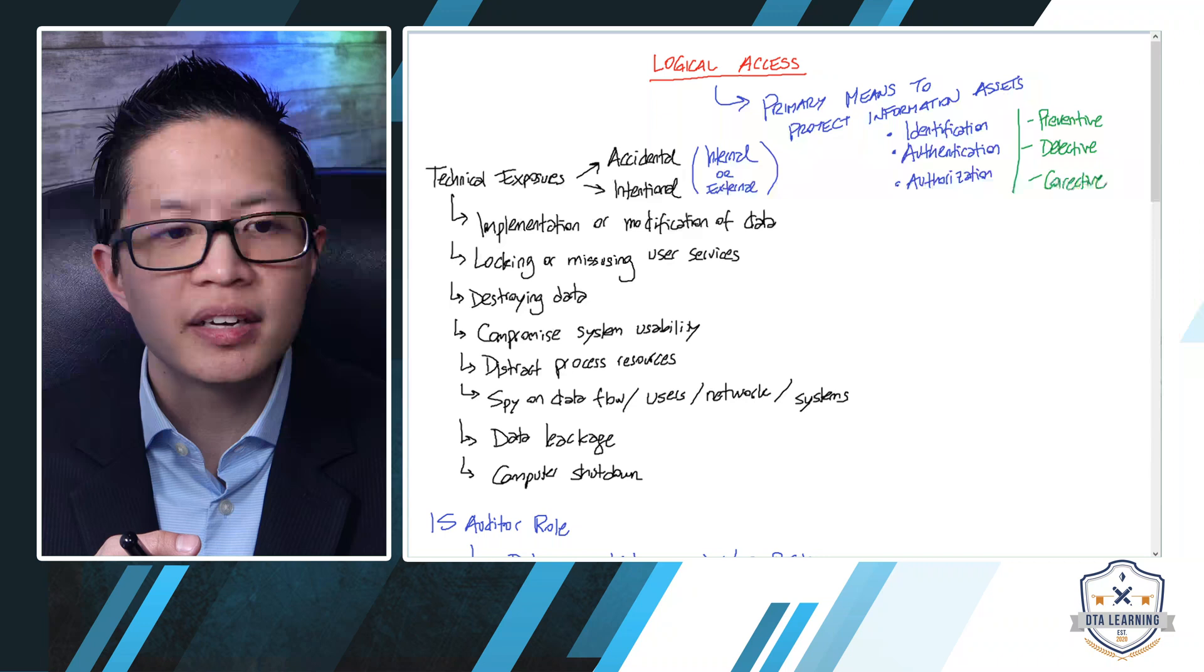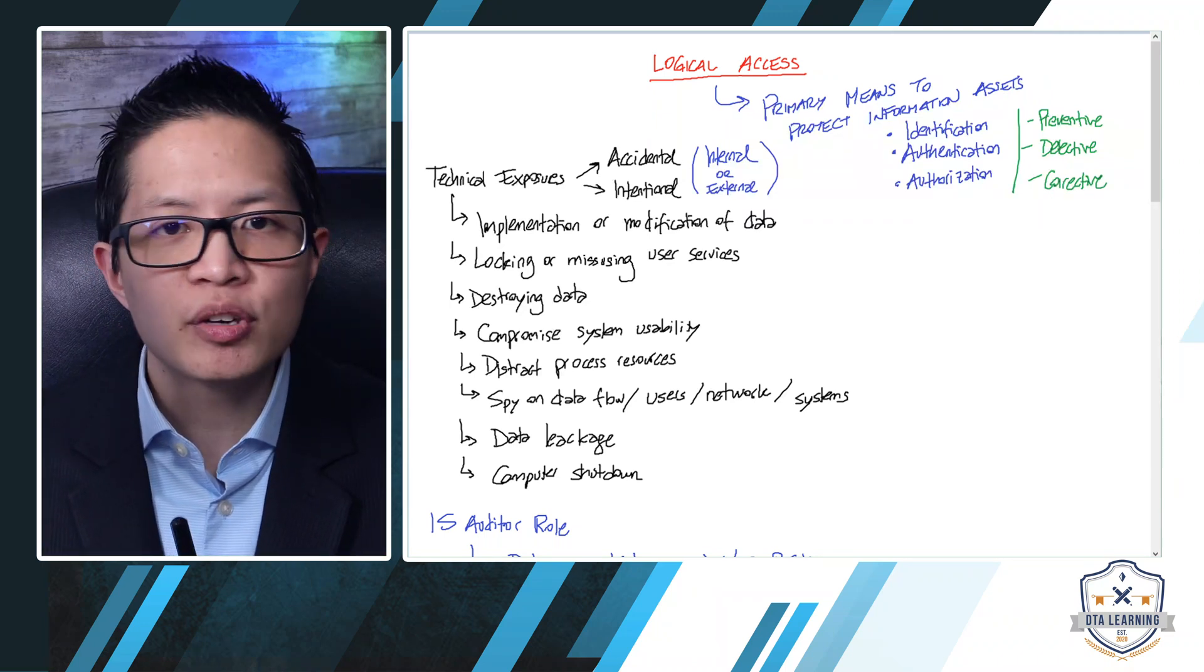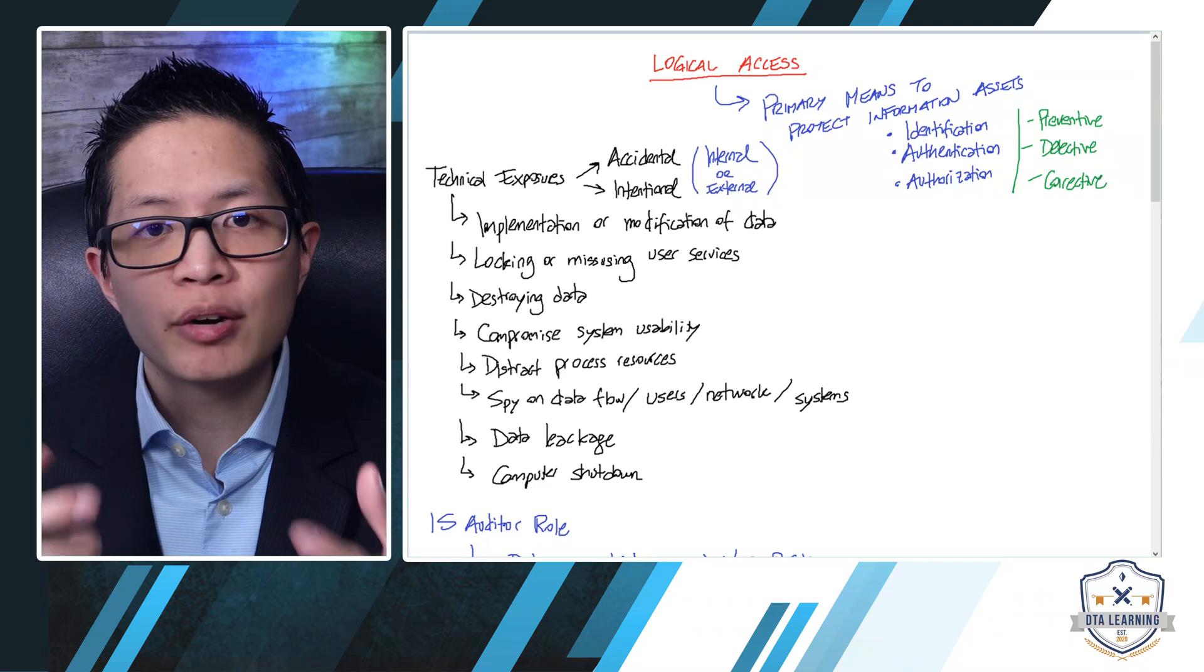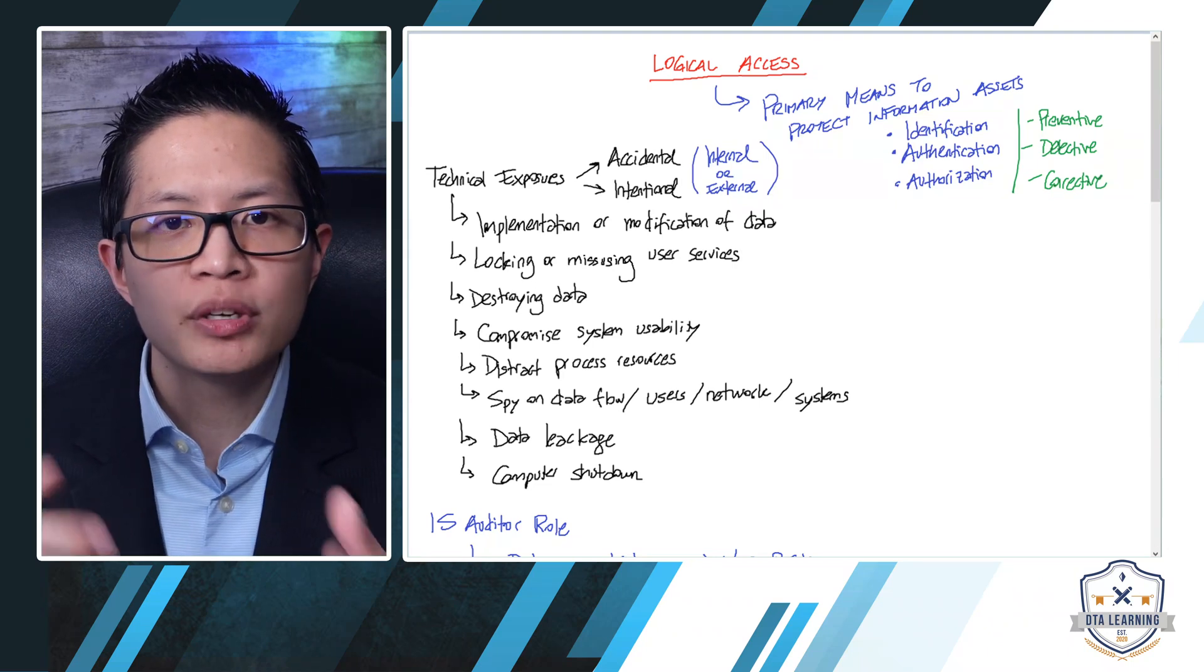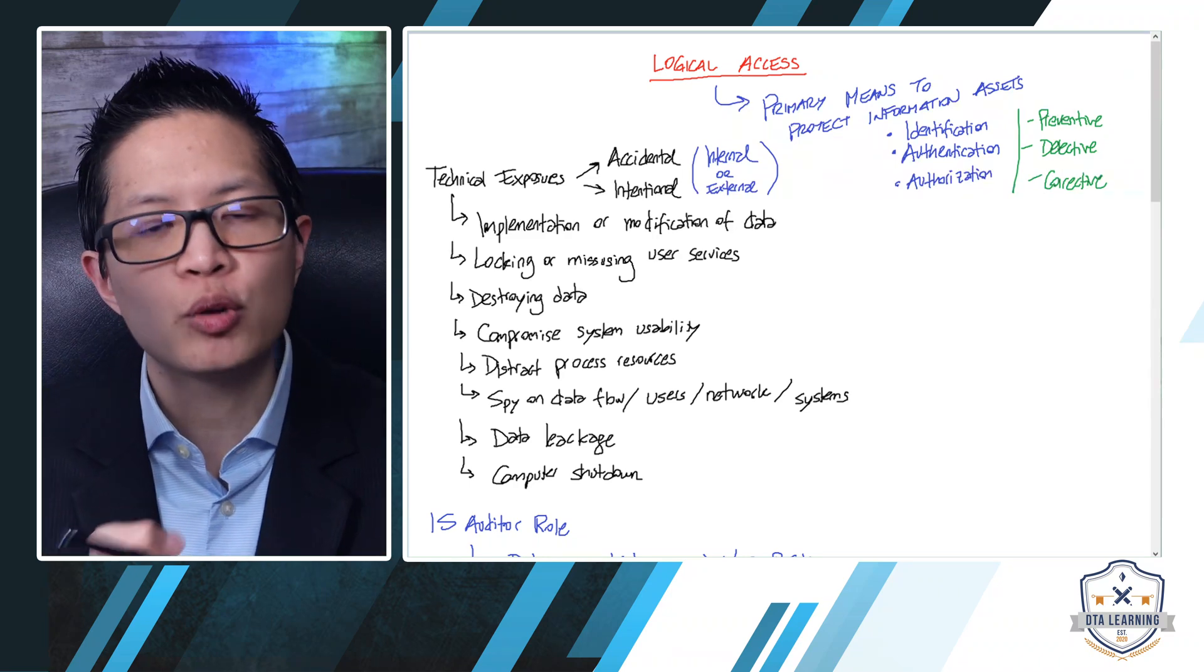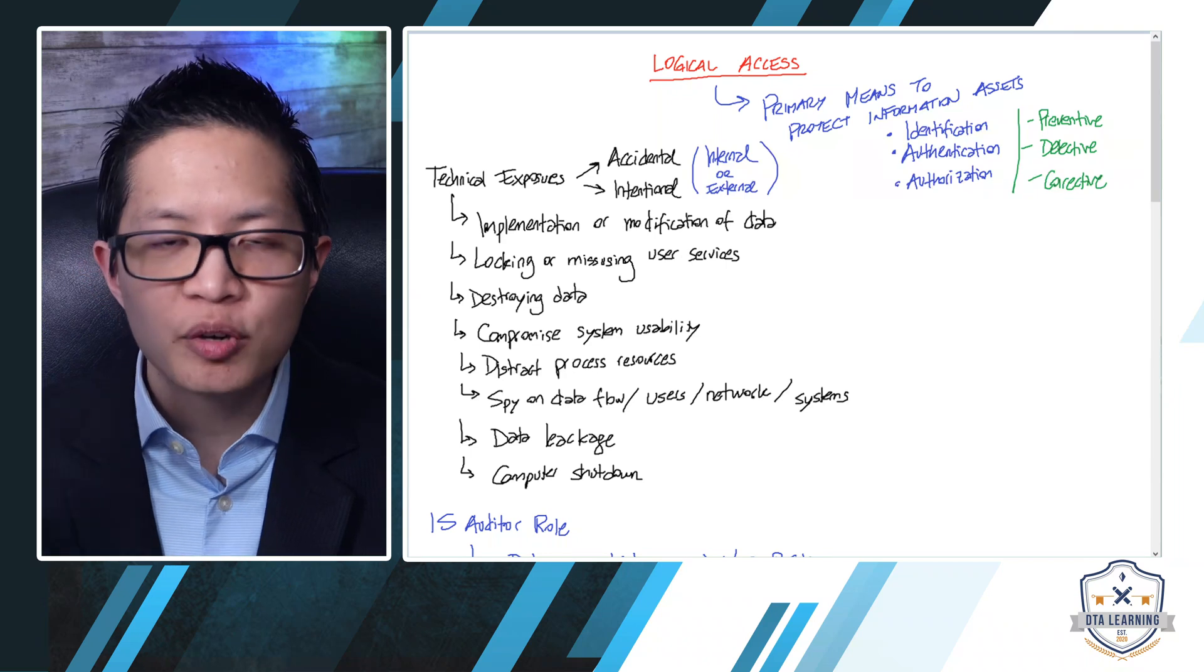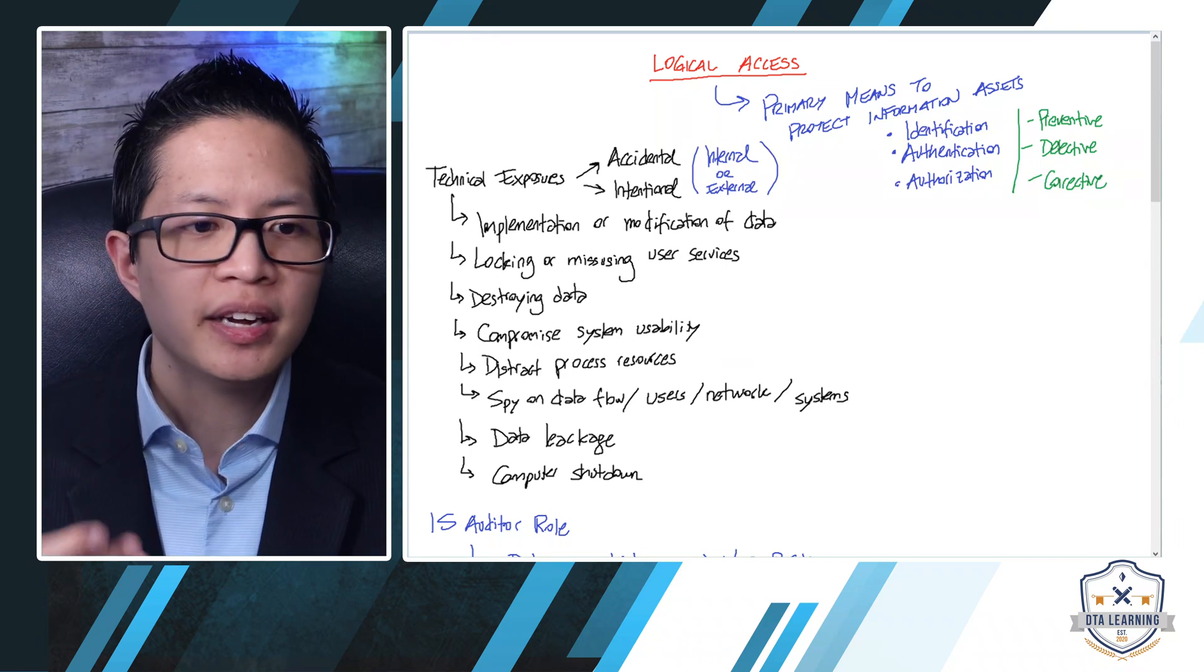compromising system usability, distract process resources, similarly to the previous one, where basically you use the resources to do something, and now the computer is busy doing something that they are not supposed to be doing. Spying on data flow, users' network, systems, basically your entire network infrastructure, and how you do business by itself.